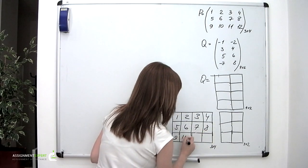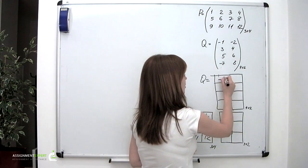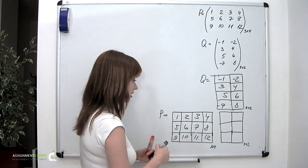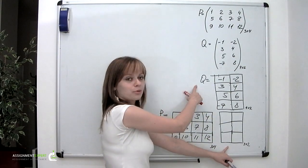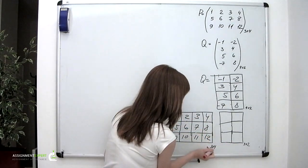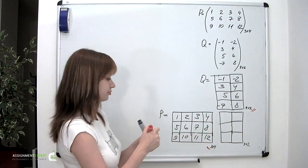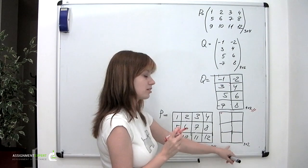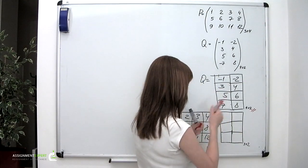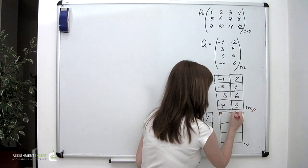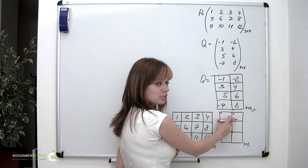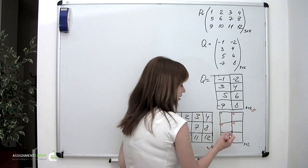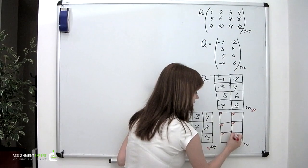And this is Q: minus 1, minus 2, 3, 4, 5, 6, minus 7, and 8. As discussed, the product matrix of P and Q will be of size 3 by 2, because P has 3 rows and Q has 2 columns. Let's label each element of the product matrix: element (1,1) and (1,2) for the first row, (2,1) and (2,2) for the second row, and (3,1) and (3,2) for the third row.